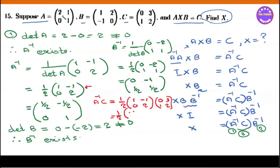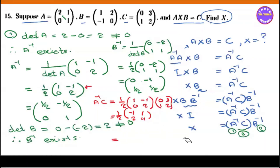First row, first column: 0, minus 1 gives 1. First row, second column: minus 1 times 3 is minus 3, plus 2 gives minus 1. Second row, first column: 0 times 0 plus 2 times 1 gives 2. Second row, second column: 0 times 3 plus 2 times 2 gives 4. So the result is 1 over 2 times the matrix: minus 1, minus 1, 2, 4.